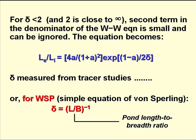We can measure delta from tracer studies, or just for waste stabilization ponds, we can get an estimate of delta from von Sperling's equation, which says that delta is the reciprocal of the pond's length to breadth ratio.